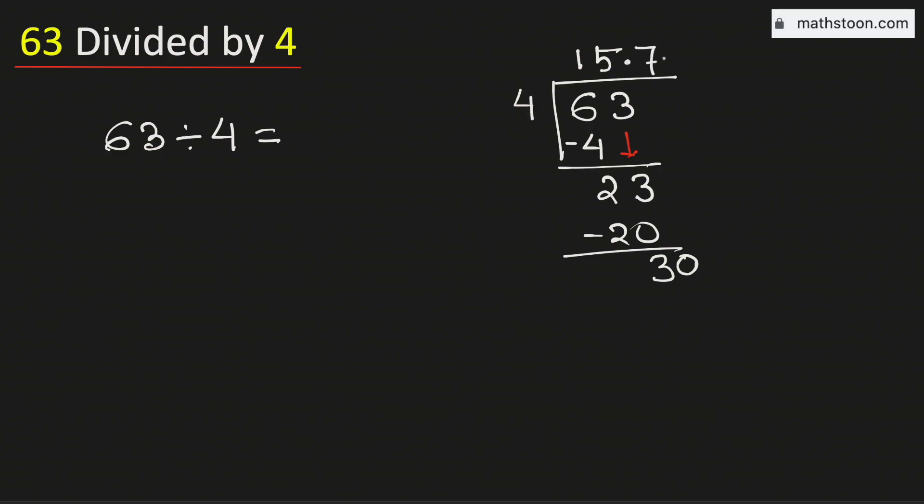We know that 4 times 7 is 28, subtract we get 2.